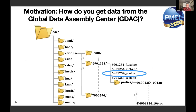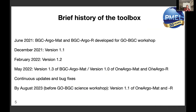The GDAC structure uses float-level S-prof files for BGC floats and profile files for core and deep floats. Individual profile files are not used. The toolbox can also download the trajectory, meta, and tech files if you need them. The toolbox started two years ago for the first GoBGC workshop, was expanded to full Argo or OneArgo last year, with the name changed accordingly. Before the next GoBGC science workshop in August, it will be labeled version 1.1.